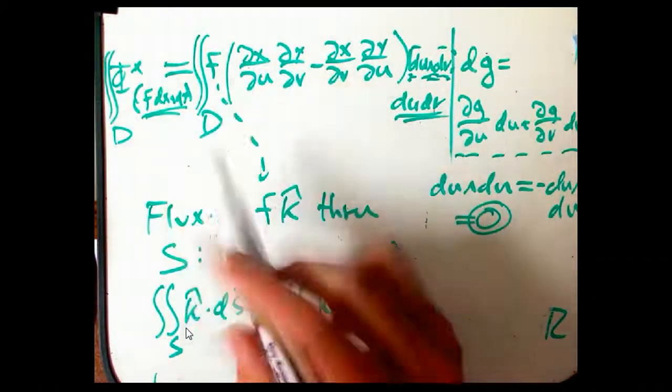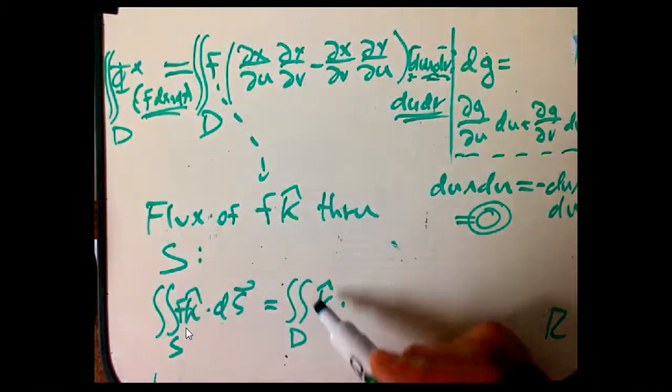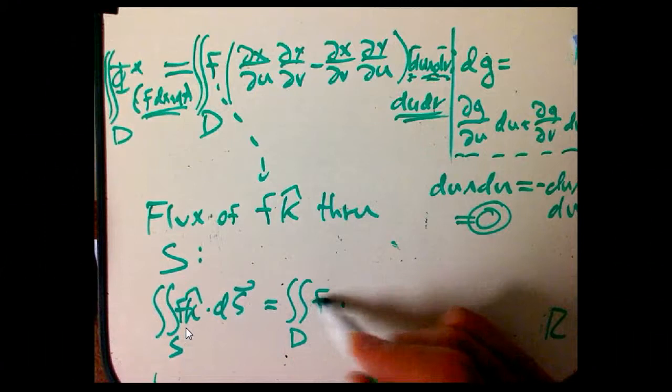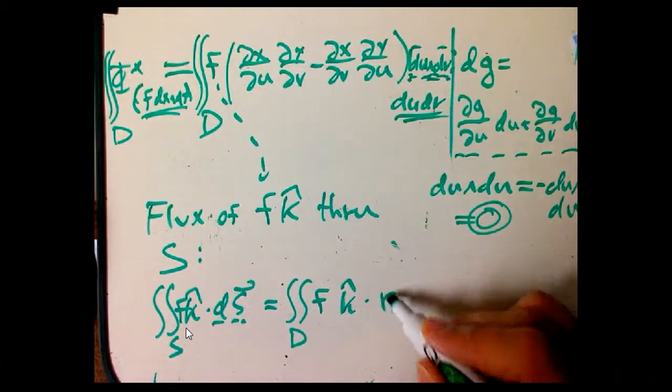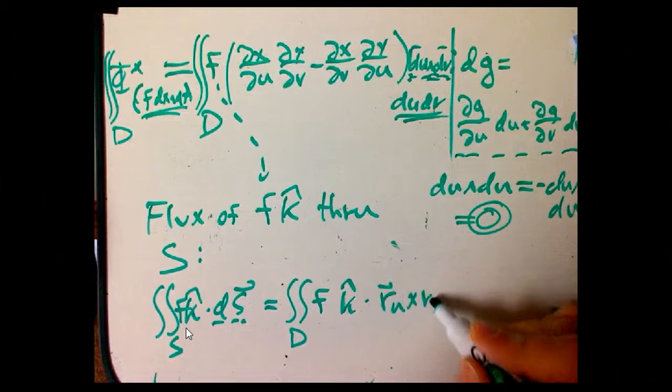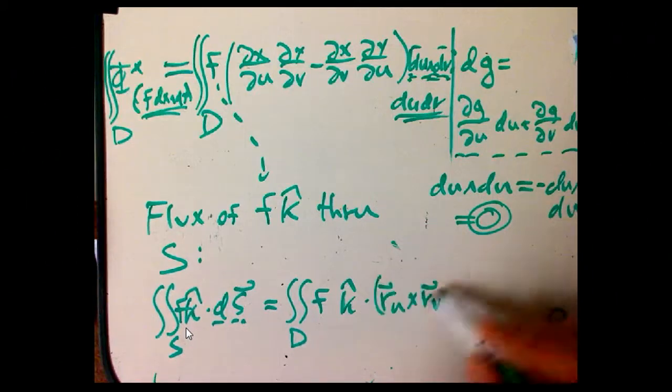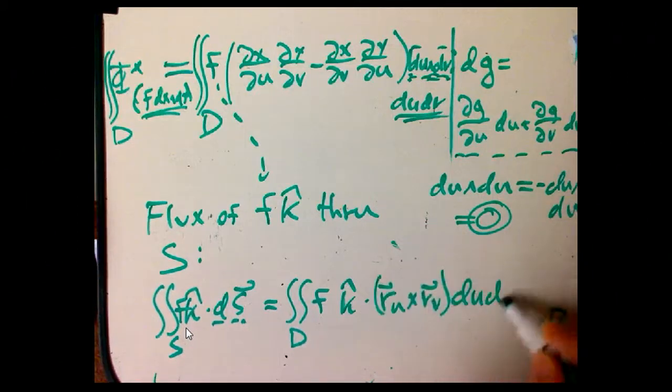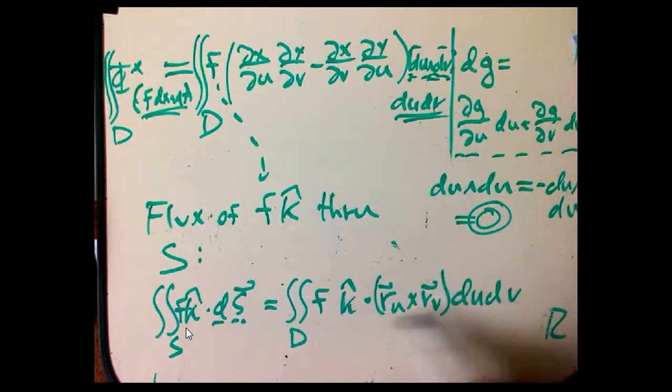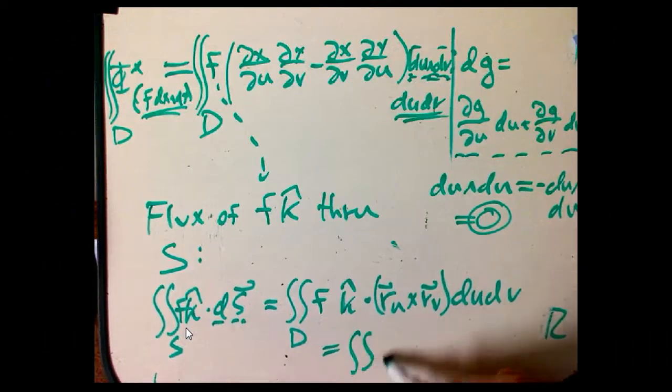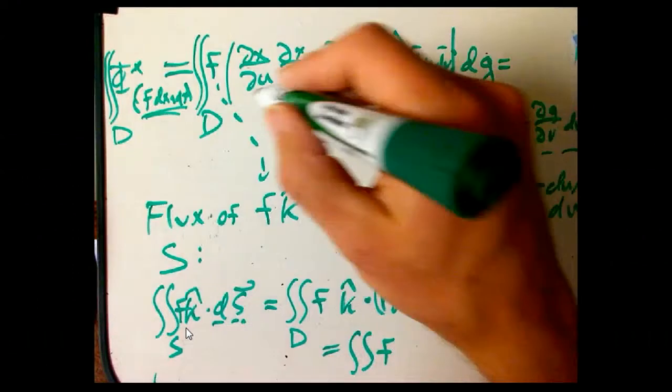So that's fk. So that's going to be f times k dot, and what do we have to do to this? We have to take those like rᵤ cross rᵥ guys, du dv, and then dot it with k. So we're getting the k component of a cross product, and this is built out of partial derivatives. And so that's going to be integral of f,